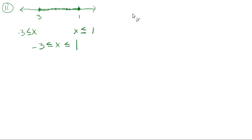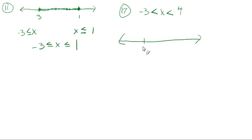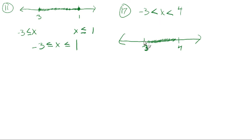Let's do number 17 and go the other way: negative three needs to be less than x, and that x needs to be less than four. Drawing a number line with negative three and four, x needs to be bigger than negative three but stay less than four. What about right at negative three — do we include it? No, x cannot equal negative three. There's no equals sign, so open circle there, and also open circle at four — x can't be exactly equal to four either.